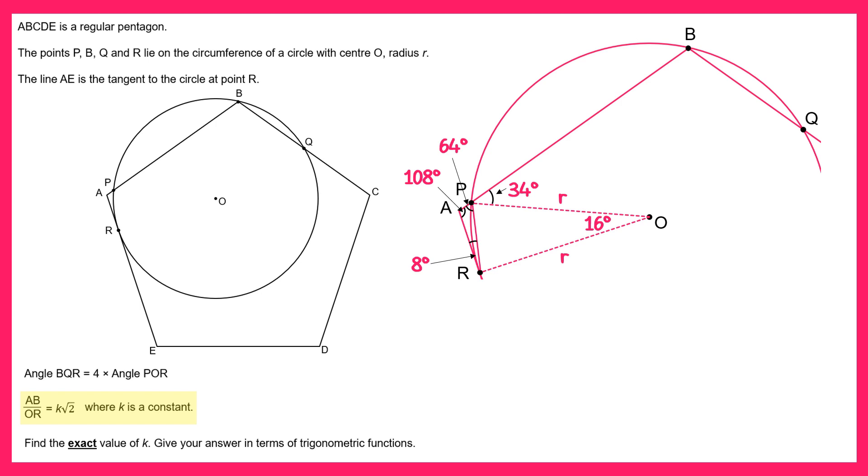Looking at the triangle OPR we can use the cosine rule. PR squared would equal R squared plus R squared take away 2 times R times R times cos 16. Then if you simplify the right hand side you get PR squared equals 2R squared minus 2R squared cos 16. Then you can factorise out the 2R squared so you get PR squared equals 2R squared lots of 1 minus cos 16.